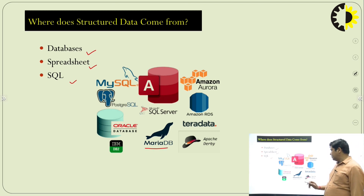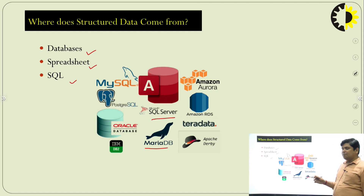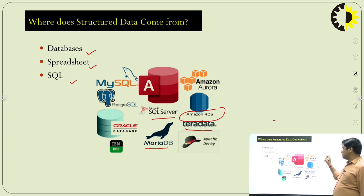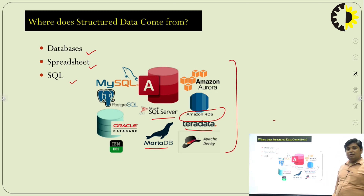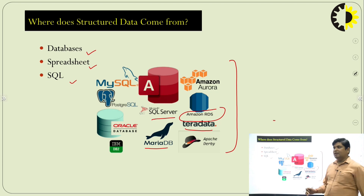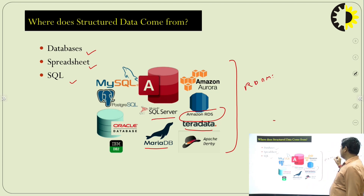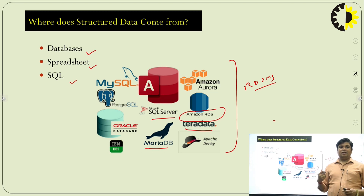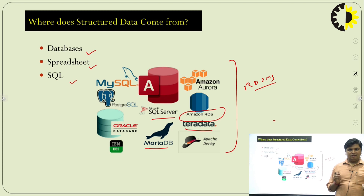This is MariaDB, SQL Server — which is capable to store bulk amounts of data — Teradata, and Amazon RDS. These are some popular servers for dealing with relational database management systems, or RDBMS. So this is the example of structured data — simply, the data is well managed, well structured, stored and retrieved in a particular pattern.